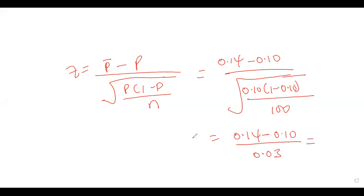Computing the z-value: 0.04 divided by 0.03 gives 1.333 recurring. So the computed z-value is 1.333.